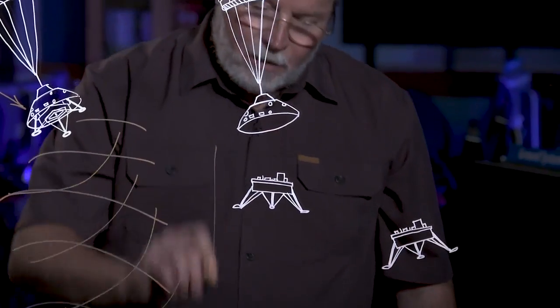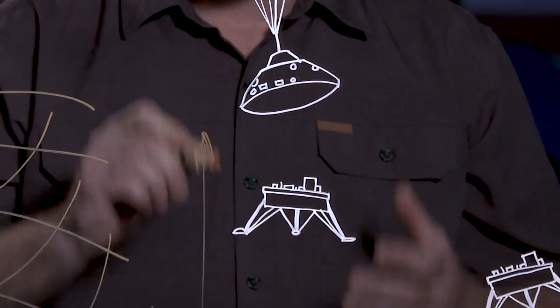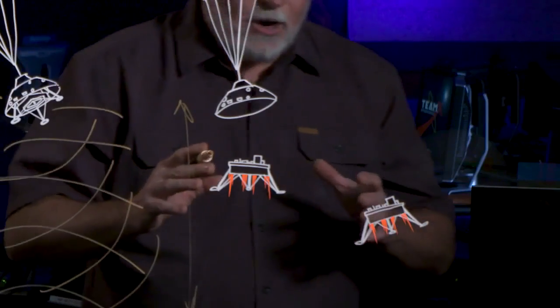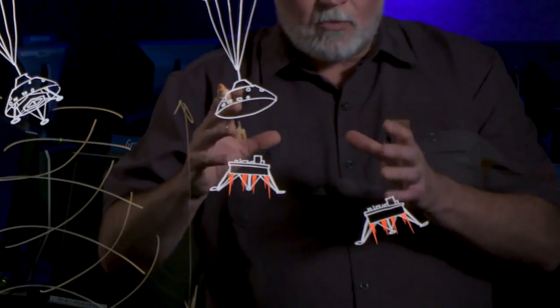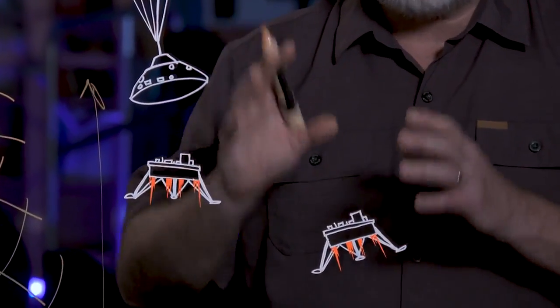At about a mile above the surface of Mars, the lander falls away from the back shell and lights its engines. And very quickly, the vehicle must rotate out of the way so that the parachute and the back shell doesn't come down to hit it.